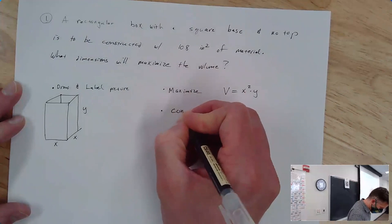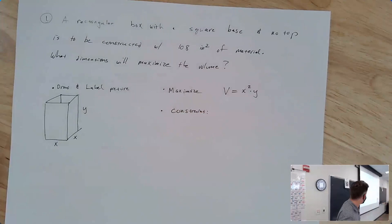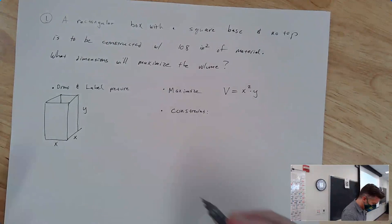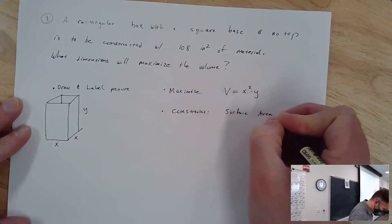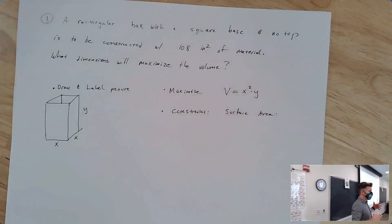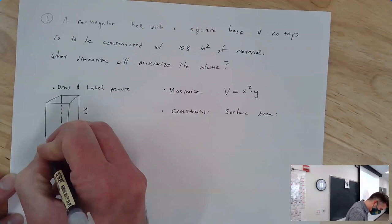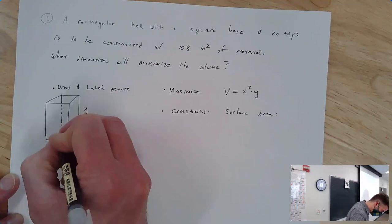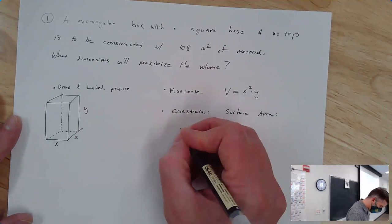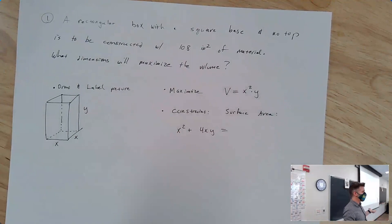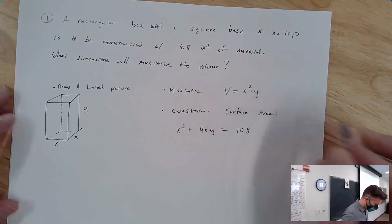108 comes up in our constraint. Our constraint is that we have 108 square inches of material to work with. When someone says you have this much material to work with, they're talking about surface area. The bottom is going to be x squared, and then each of the four sides is x times y, giving us 4xy. We're going to use all of the material, so we set x squared plus 4xy equal to 108. That's our constraint.